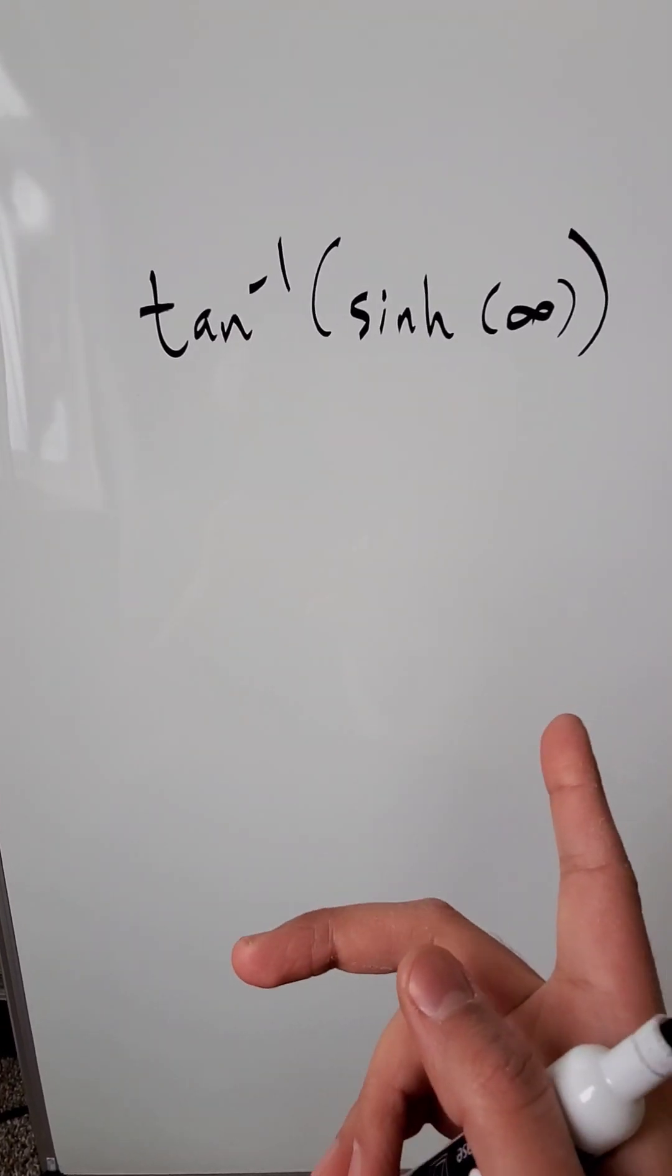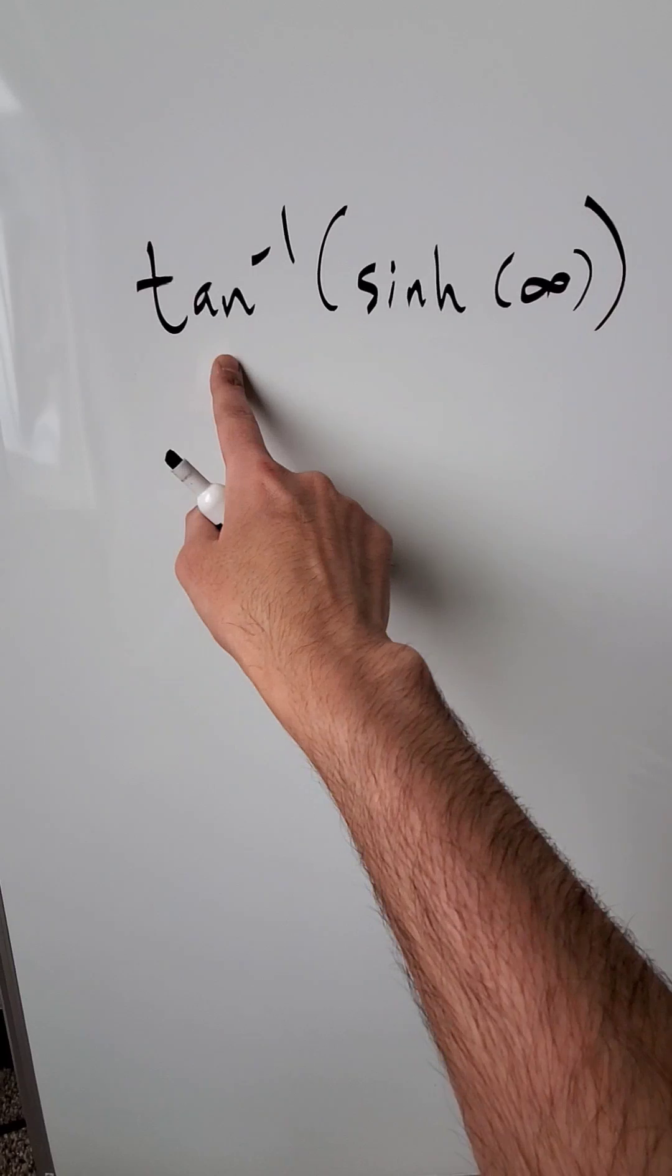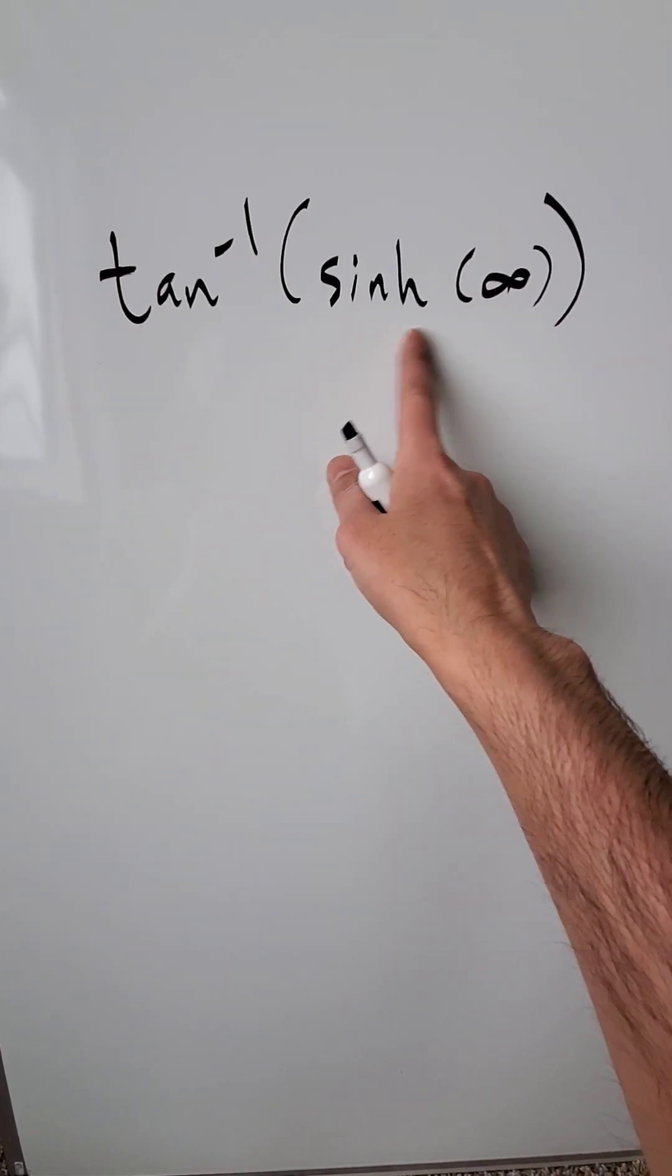We need to evaluate this expression. Find the exact value, no calculator allowed, of what you see: inverse tan or the arc tan of hyperbolic sine of infinity.